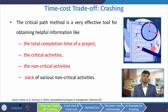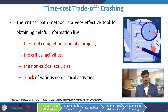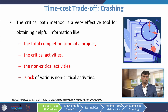The critical path method is a very effective tool for obtaining helpful information like total completion time of a project, critical activities and non-critical activities, and slack of various non-critical activities. The advantage of knowing this information is: we know the total completion time, we focus on critical activities that have to be carefully managed, and for non-critical activities we can delay the time and utilize the slack.